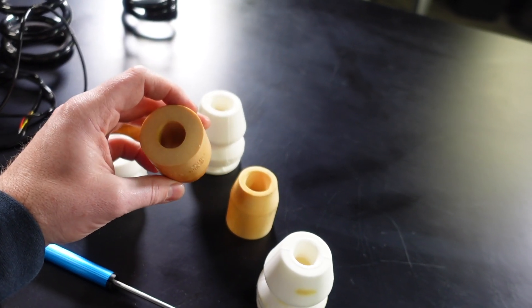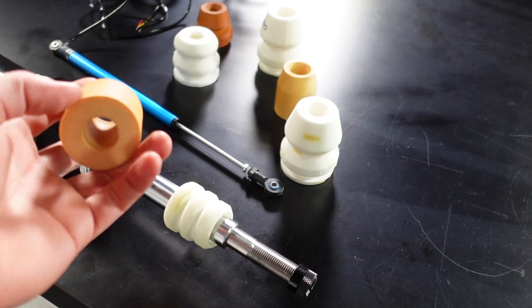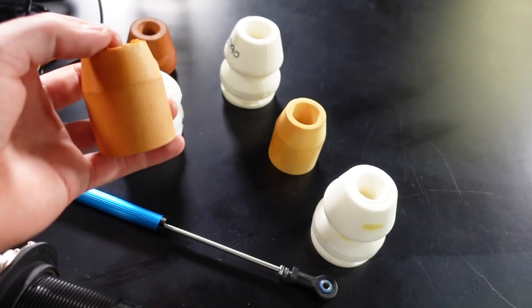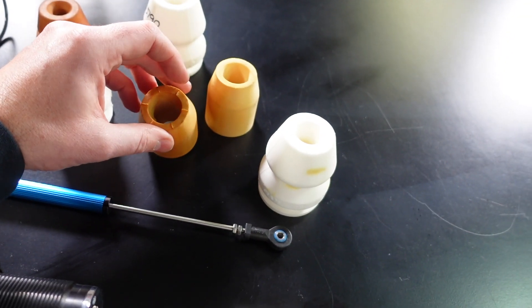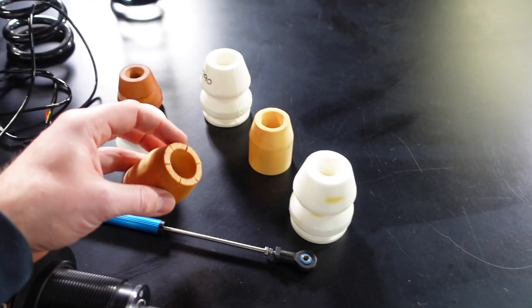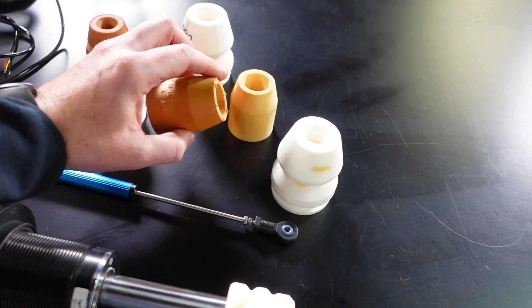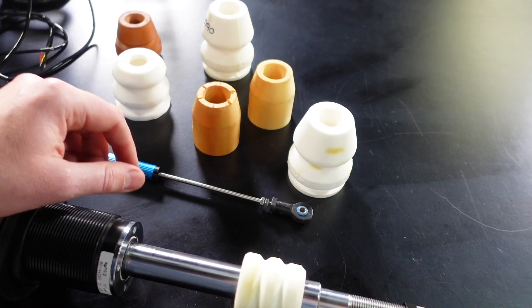Another reason we make use of bump stops is in high downforce applications. In a car with a really effective floor, say with front and rear diffusers and maybe even a flat centre section, the ride height is really critical to the performance. It affects the downforce and drag a lot.